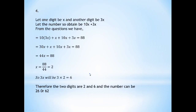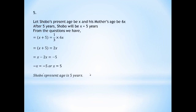So 44x is also equal to 88. So x equal to 88 by 44. 44 into 88: x equals 2. And three into two gives six, so one and three into two gives six — so the answer is two.